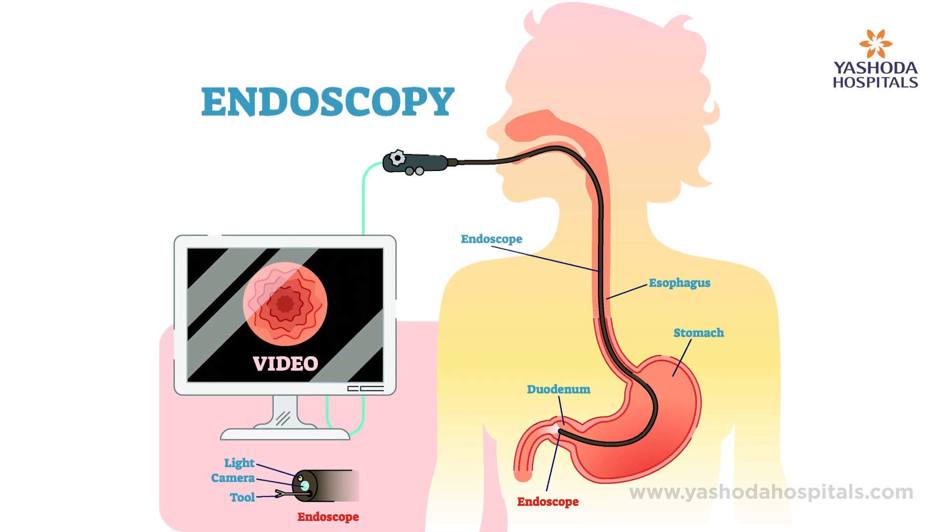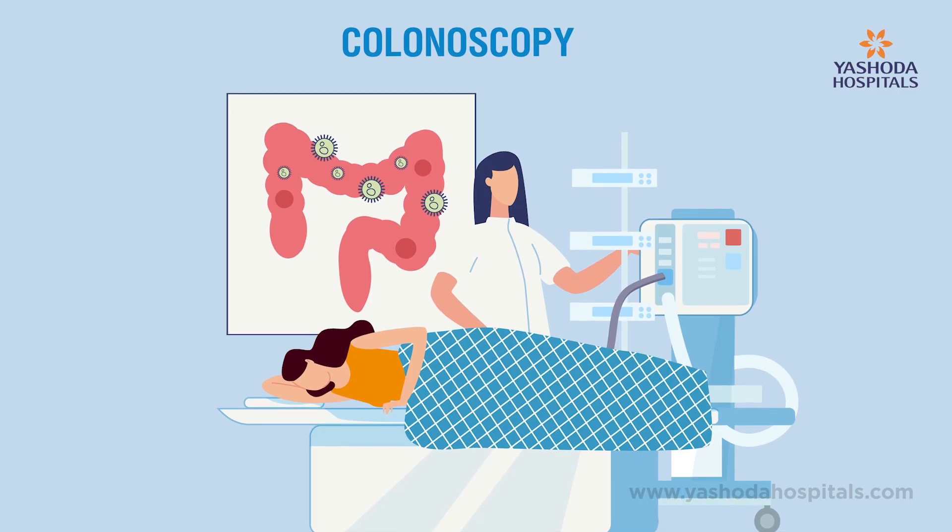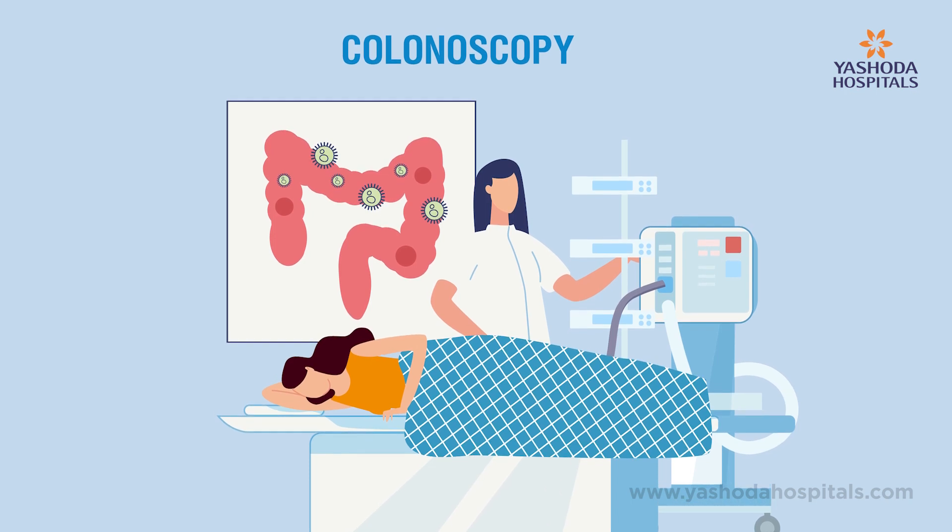Endoscopy is a camera test which goes through your mouth, allowing us to see the food pipe, the stomach, and the first part of the small intestine. In colonoscopy, the camera goes from the bottom through the anal canal, and we are able to visualize the whole large intestine and some part of the small intestine as well. When we visualize and see some ulcers, we will take biopsies, and the final diagnosis will be made only with a biopsy. The biopsy microscopic examination gives us clarity about the diagnosis.